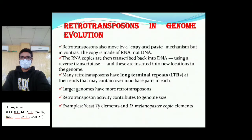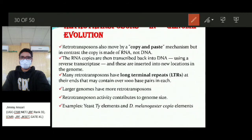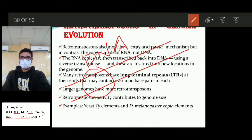Retrotransposons are class one transposons important in genome evolution. They move by a copy-and-paste mechanism, but in contrast, the copy is made as RNA, not DNA. The RNA copies are then transcribed back into DNA using reverse transcriptase. For example, a long DNA sequence containing a retrotransposon is first transcribed into RNA or mRNA during transcription.